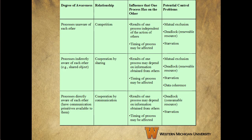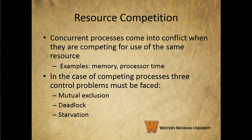This slide shows Table 5.2 on page 206 in your book, classifying the ways processes interact based on the degree to which they're aware of each other's existence. Processes unaware of each other are independent processes not intended to work together. Processes indirectly aware of each other share access to some object like an I/O buffer and exhibit cooperation. Processes directly aware of each other can communicate via PIDs and are designed to work jointly. Concurrent processes come into conflict when competing for the same resource — memory, processor time, I/O buffers, etc.